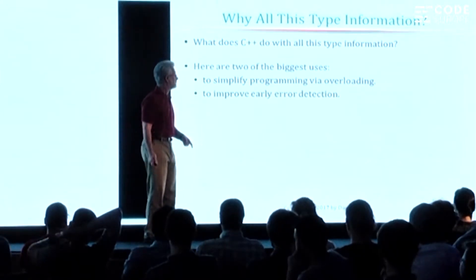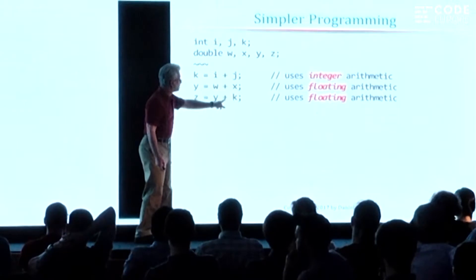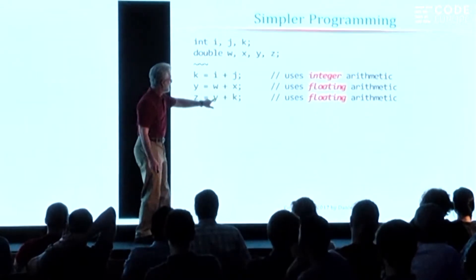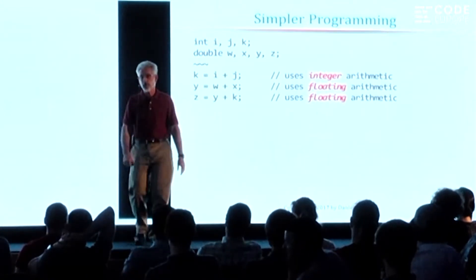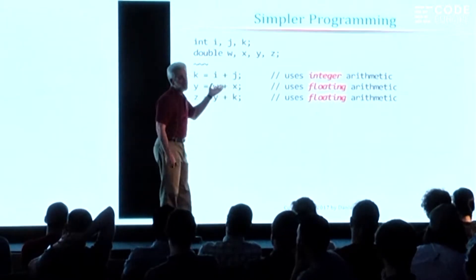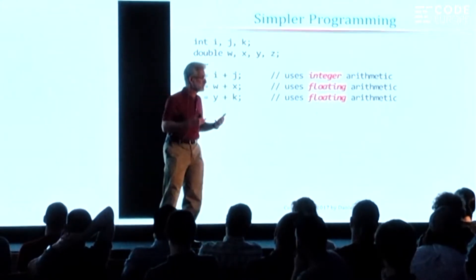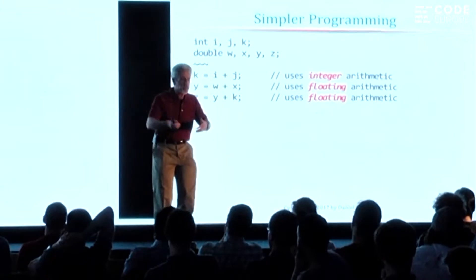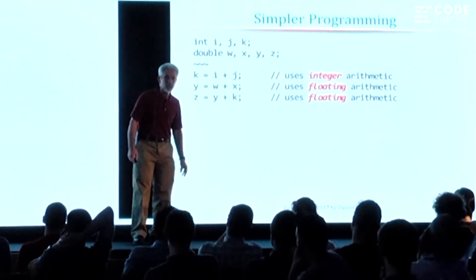And it also improves early error detection. For example, these are all using the plus operator, but one is adding two integers, one is adding two floating point numbers, and one is adding a float plus an integer. Now when we're conversing with other programmers, we do not call this an integer add, a floating add, and a mixed float add — we just say add. We quickly internalize that plus is a high-level conceptual operation. In mathematics, you have integer types and floating point types and you can mix them. The mechanics of how this is done is a detail we usually don't care about.